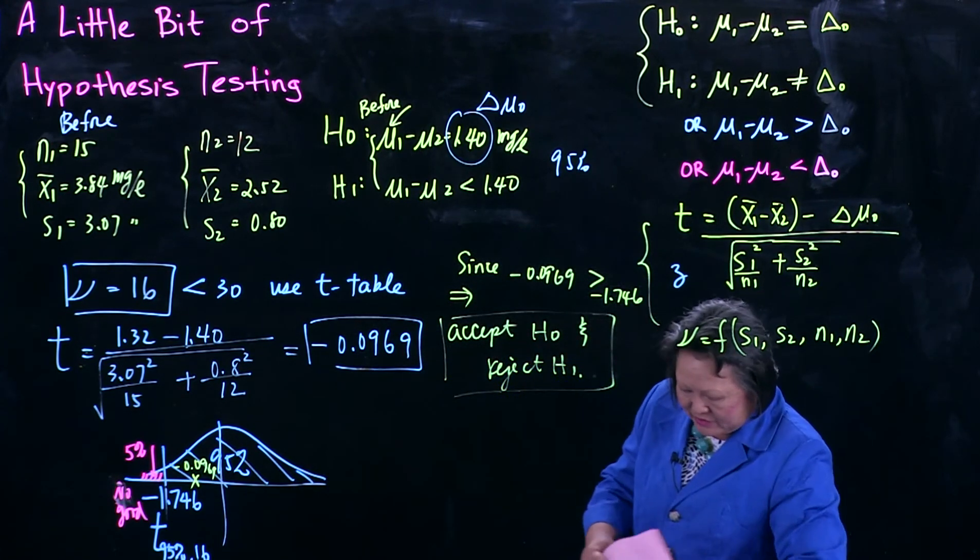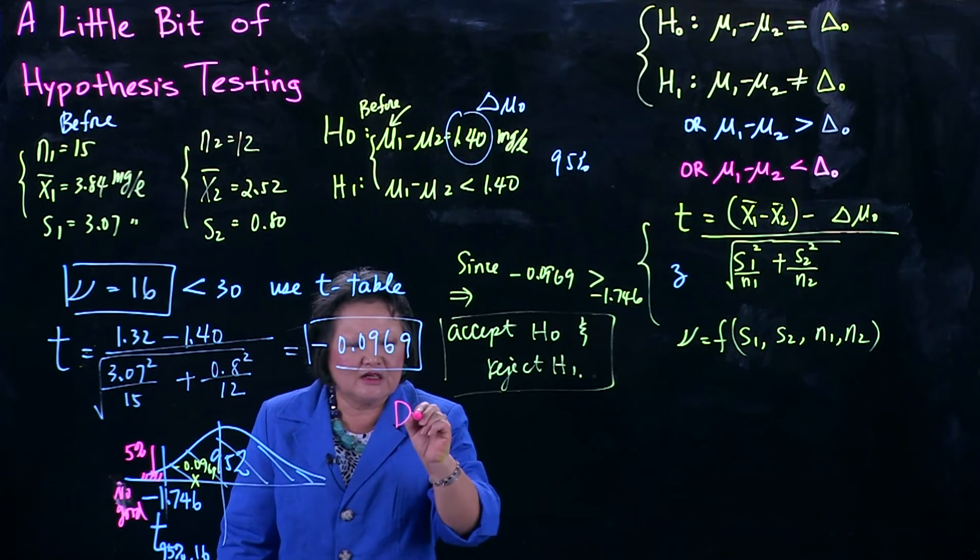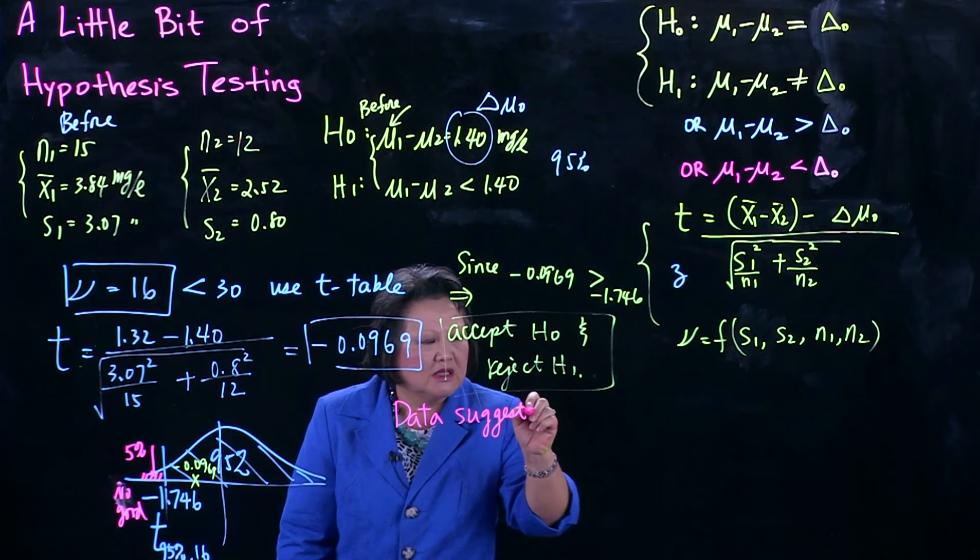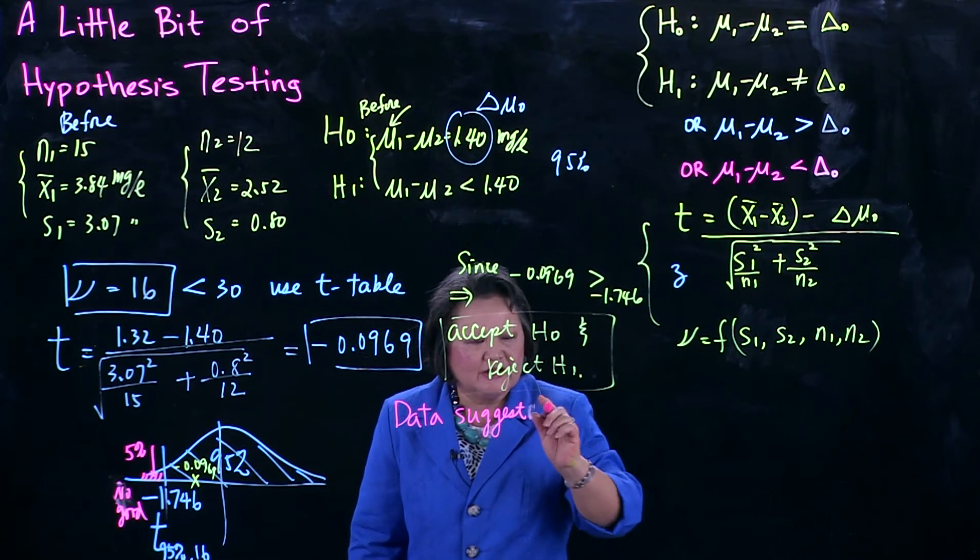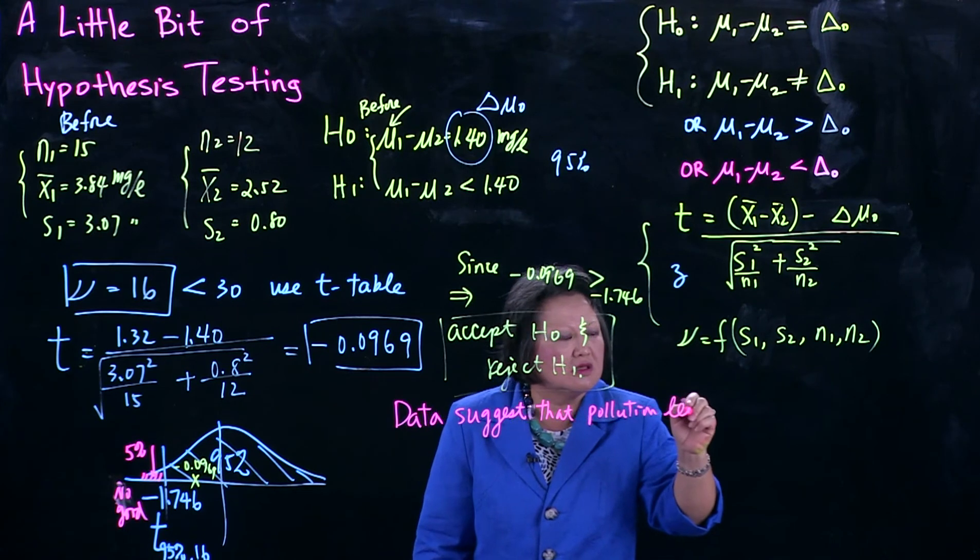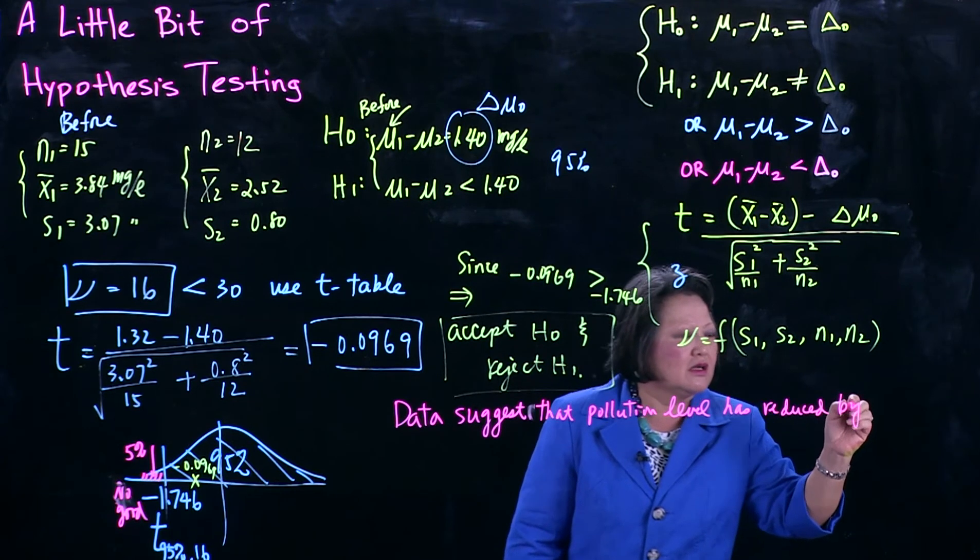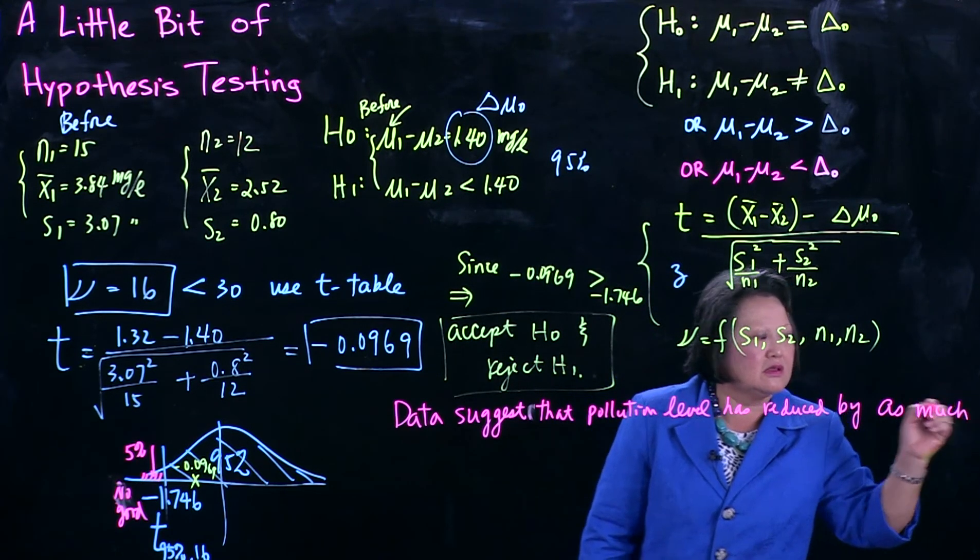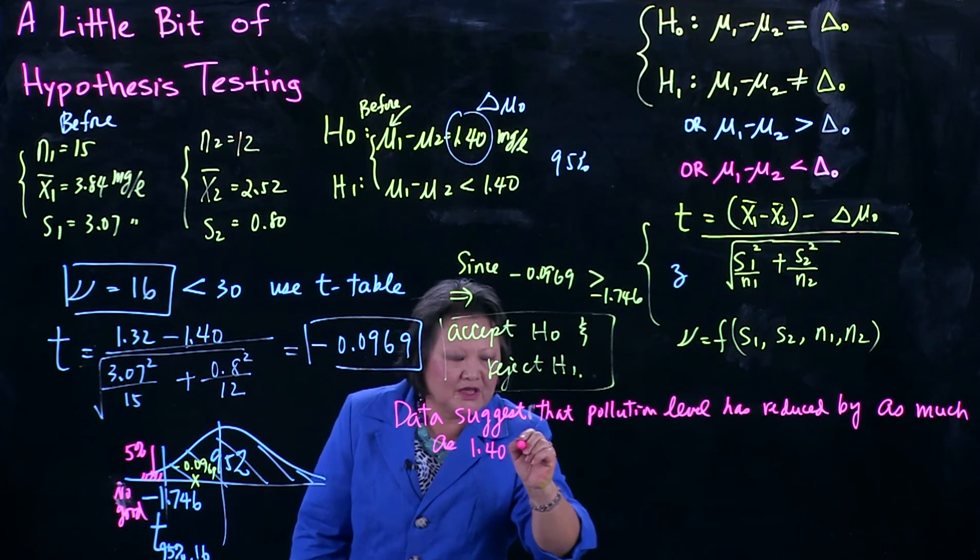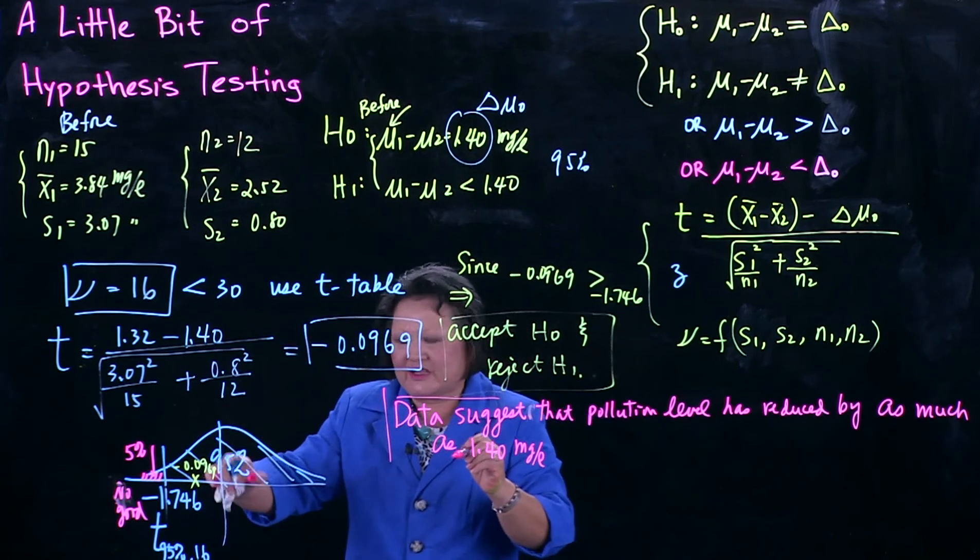What do you put in report? If you're going to submit to management where you have to put it in plain English, because they don't know what accept H0 means. You say data suggests that pollution level has been reduced by as much as, as what? This thing you tested, 1.40 milligram per liter. This is what you put, and of course you show all these testing things and so on.